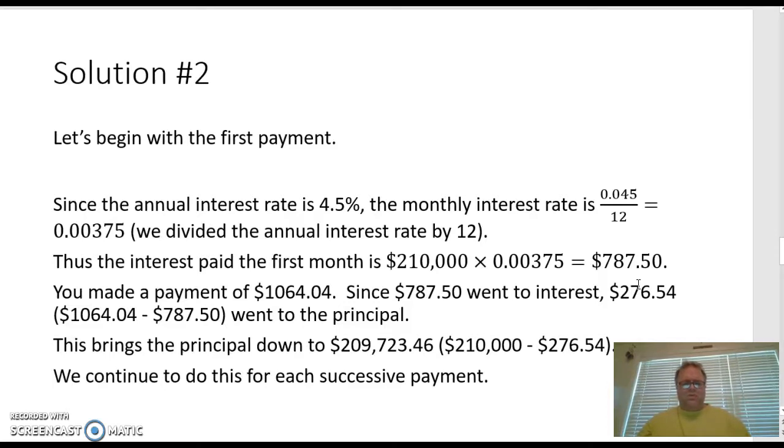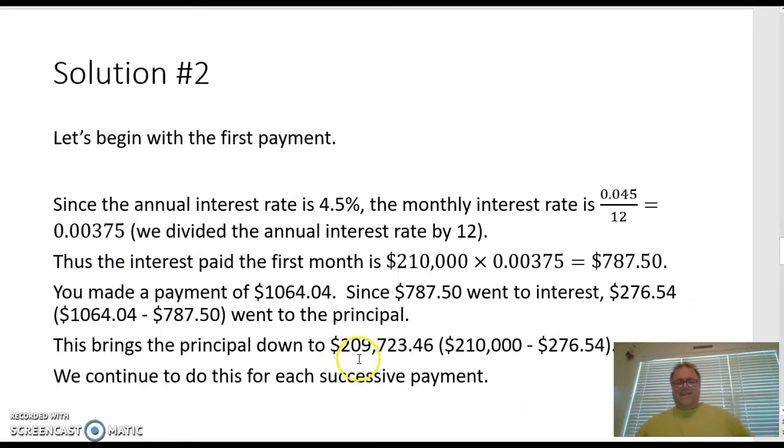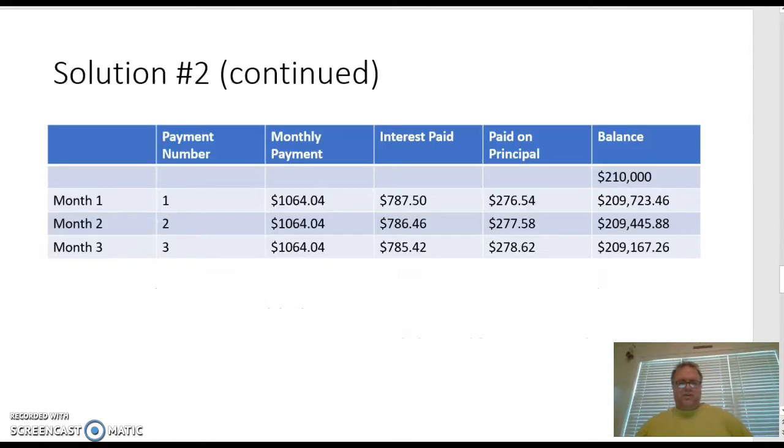Now remember, our payment that we made was $1,064.04. So since $787.50 went to interest, we just find the difference between these two figures to find out how much actually went to the principal. And in this case, only $276.54 went to pay the actual loan. This brings our principal down to $209,723.46. Because since we paid $276.54 to the principal, we just subtract that from the total amount of the principal to find our new principal.